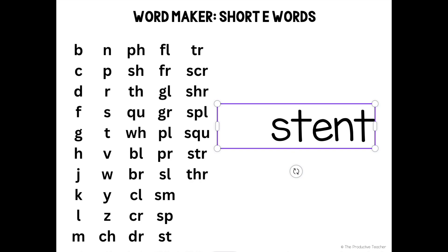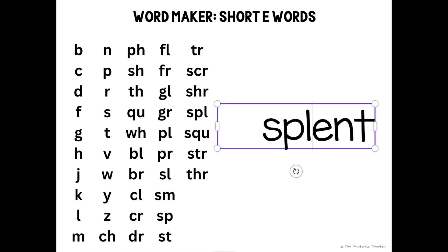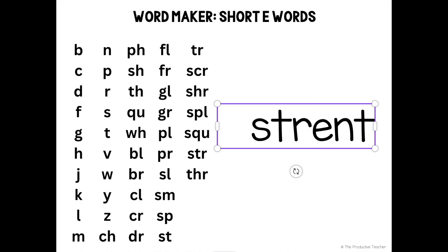Stent — stent is not a word. Trent — Trent can be a name, so we capitalize it and call it a word. Scrent — scrent is not a word. Shrent — shrent is not a word. Splent — splent is not a word. Squent — squent is not a word. Strent — strent is not a word. Thrent — thrent is not a word.